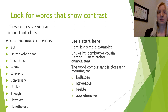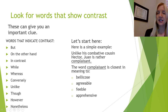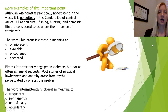Let's start with a simple example. Unlike his combative brother Hector, Juan is rather complacent. We know that Hector is combative, and we have the word 'unlike,' so complacent must mean something very different than combative. The correct answer is the second answer — complacent means agreeable. Now would be a good time to pause the video and try these on your own.